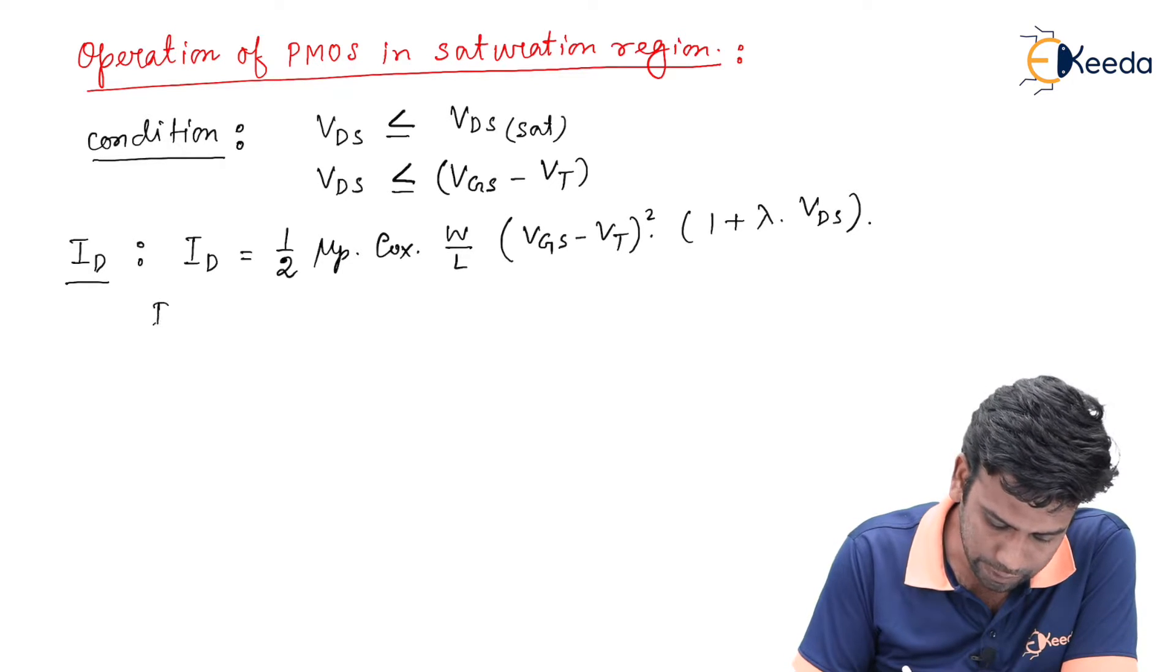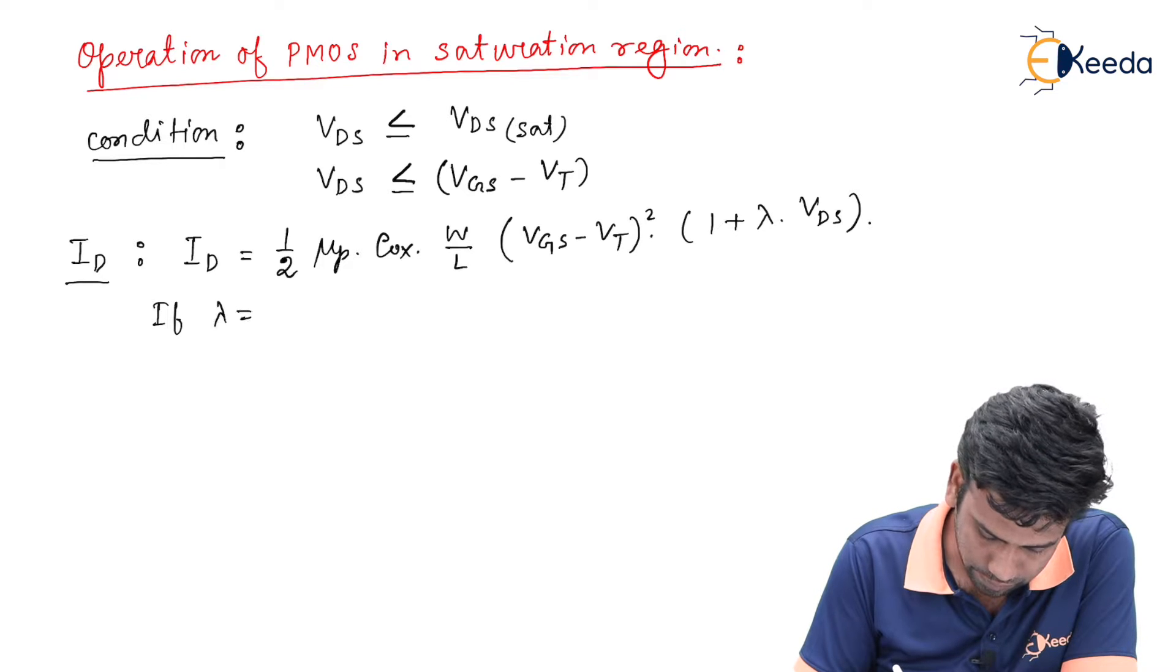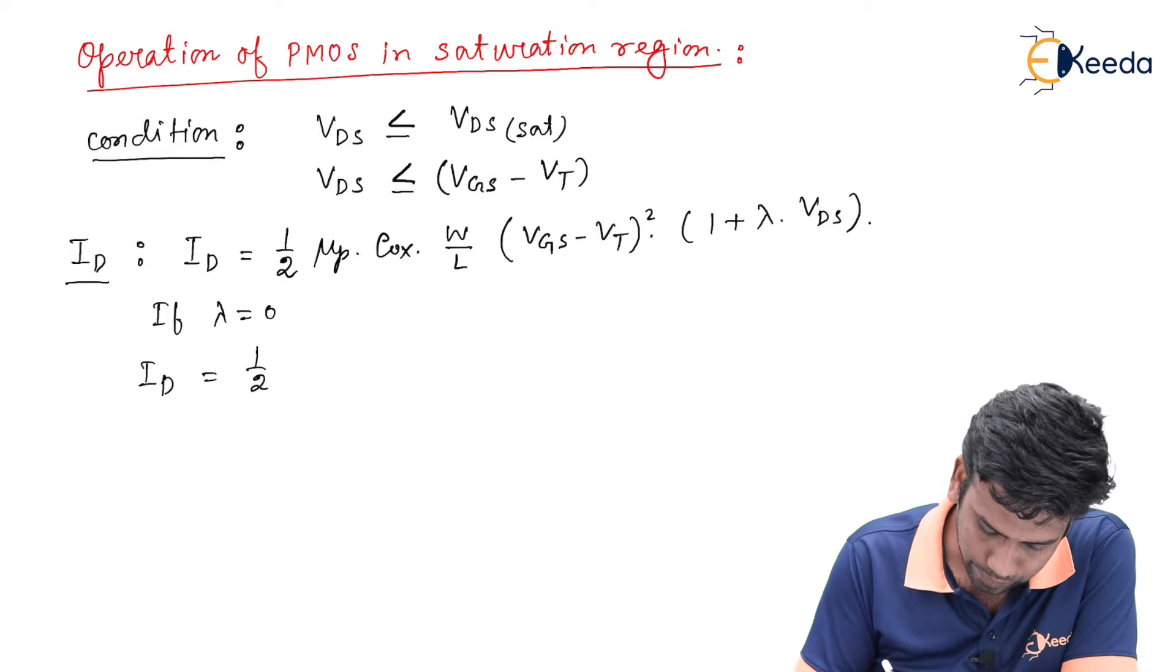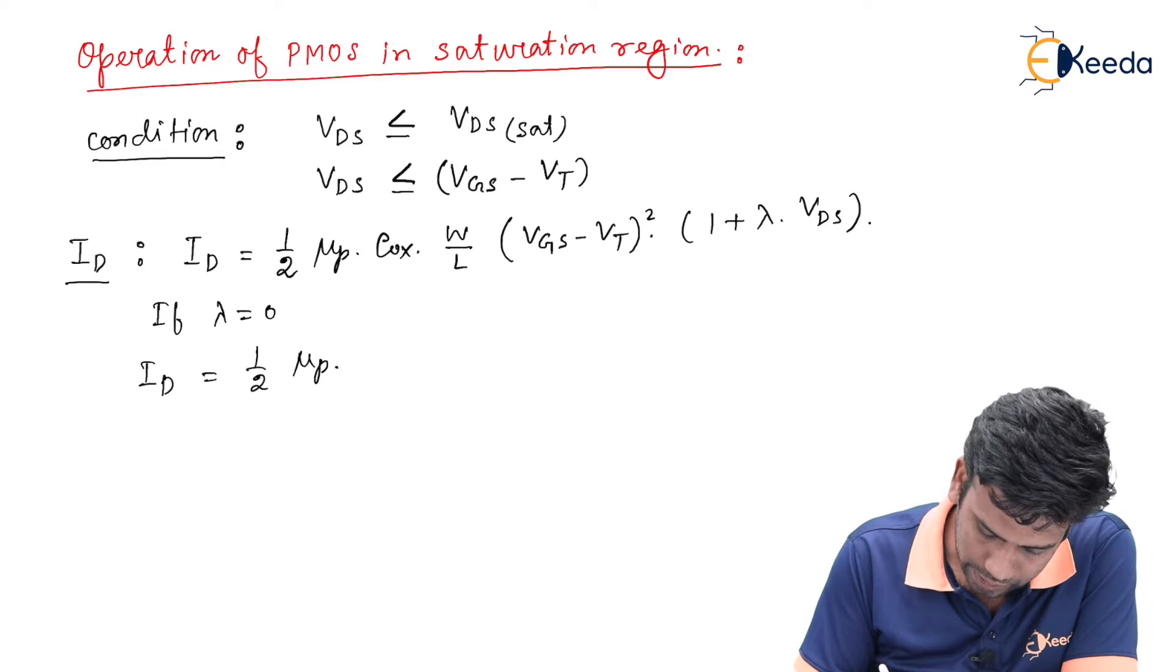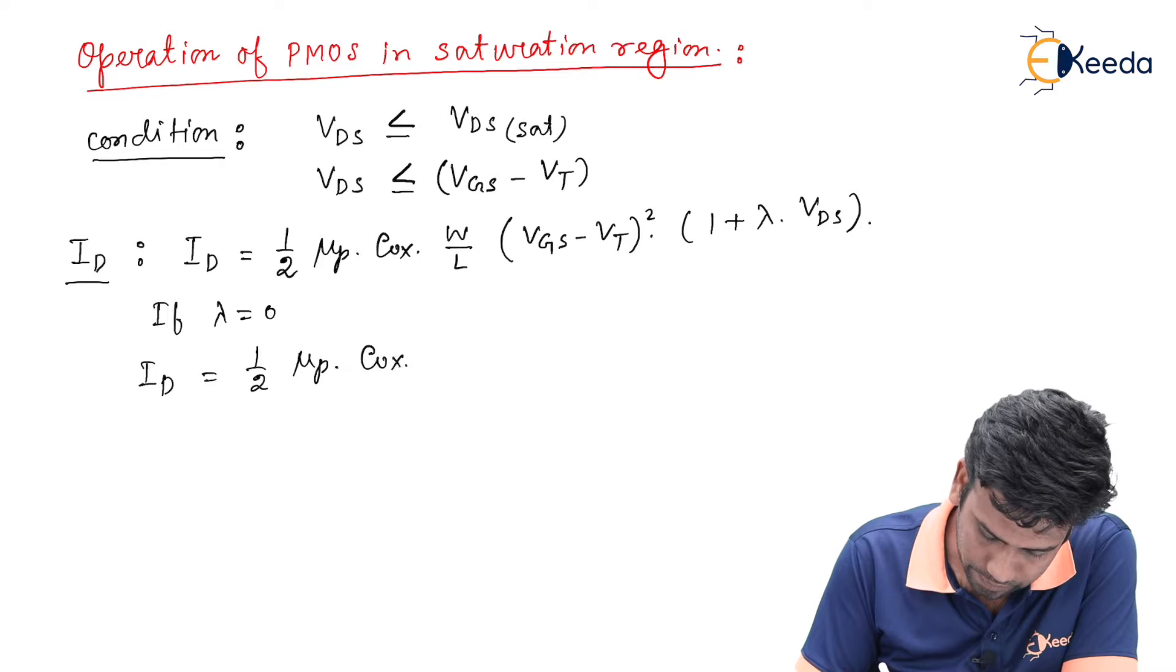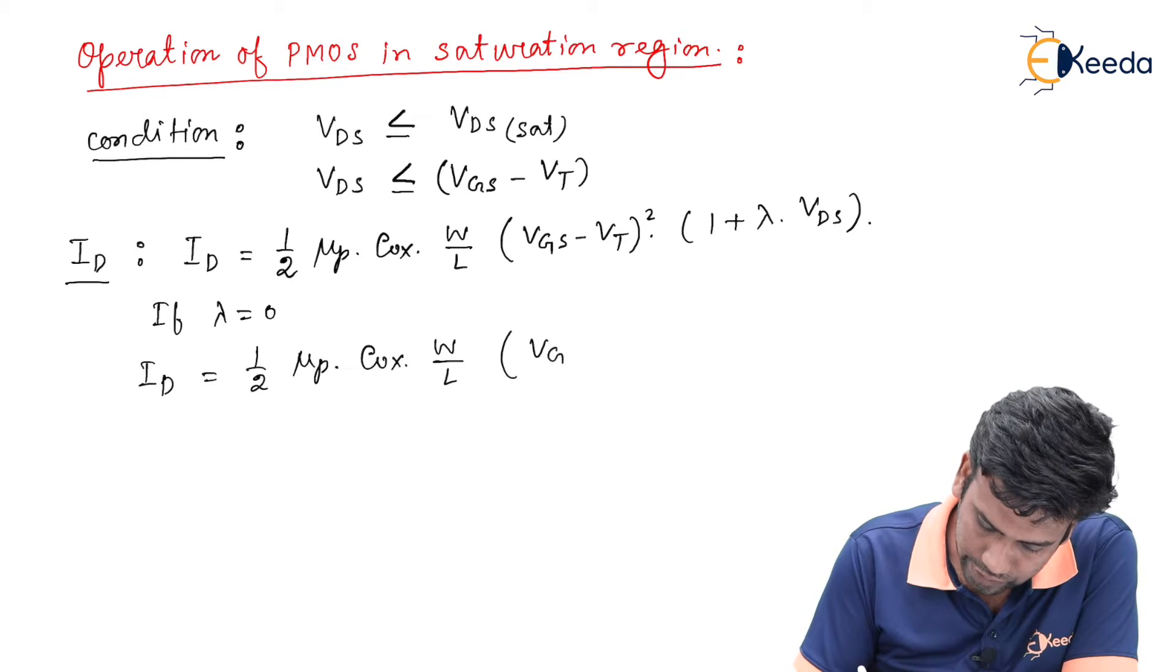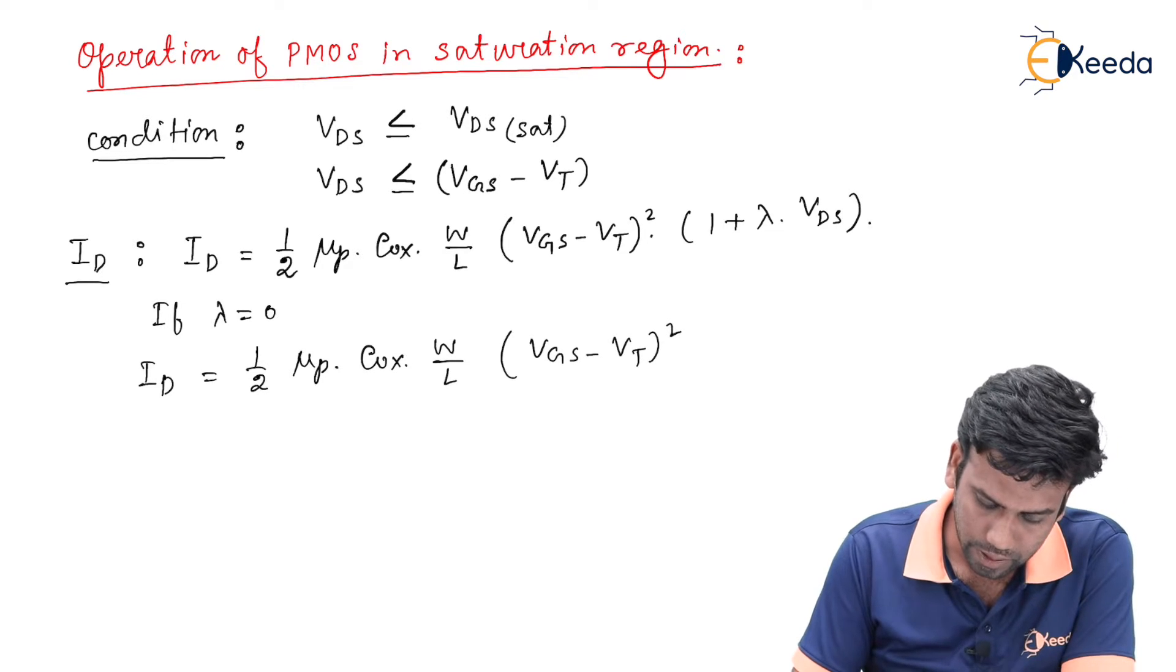We will have the equation like half mu_P COX W by L (VGS minus VT)². From this equation we can write that if mu_P and COX are constant for the given material,